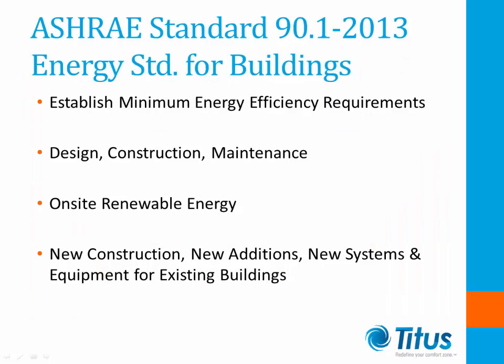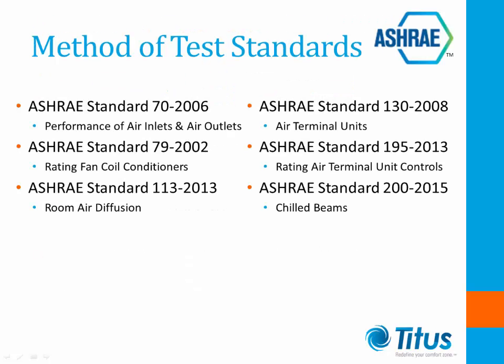ASHRAE Standard 90.1 establishes the minimum energy efficiency for buildings except for low-rise residential buildings, for design, construction, planned operation and maintenance, and utilization of on-site renewable energy sources. This includes new construction, new additions, new systems, and equipment for existing buildings. As designers, your main concern with ASHRAE method of test standards is to know that the tests conducted to achieve the performance data the manufacturer provides were done in accordance with the appropriate standard.